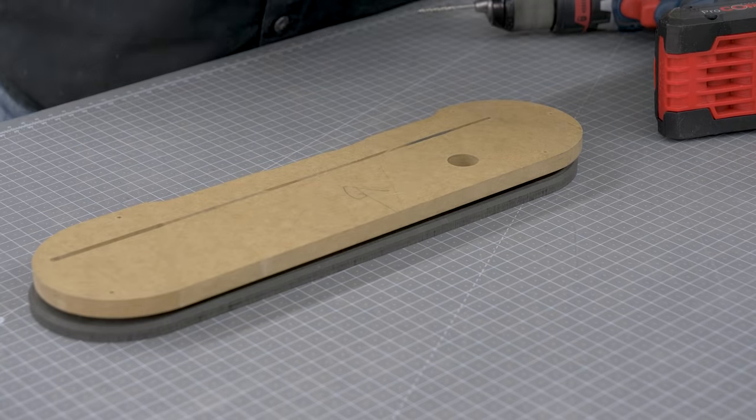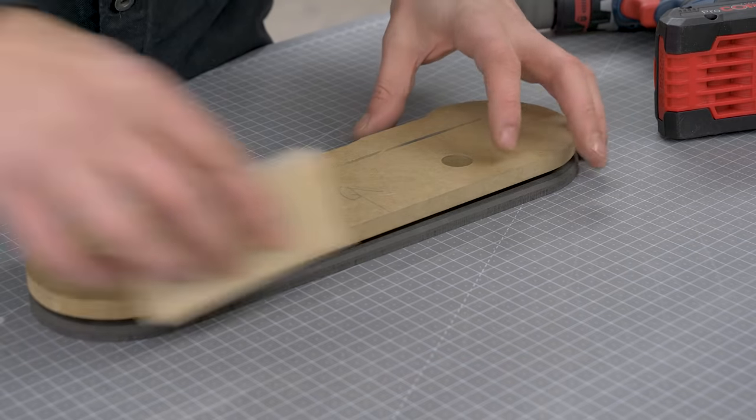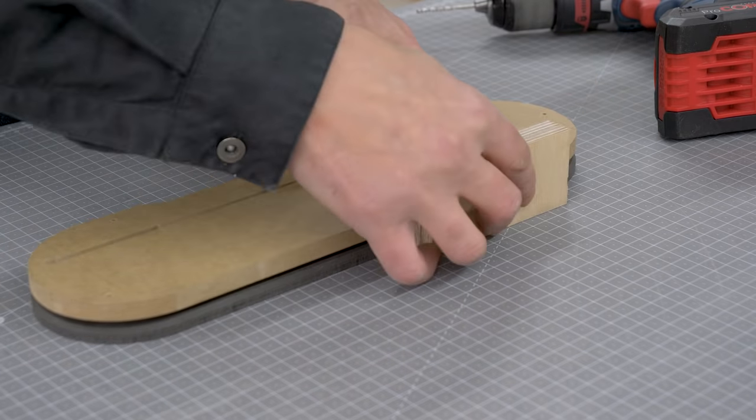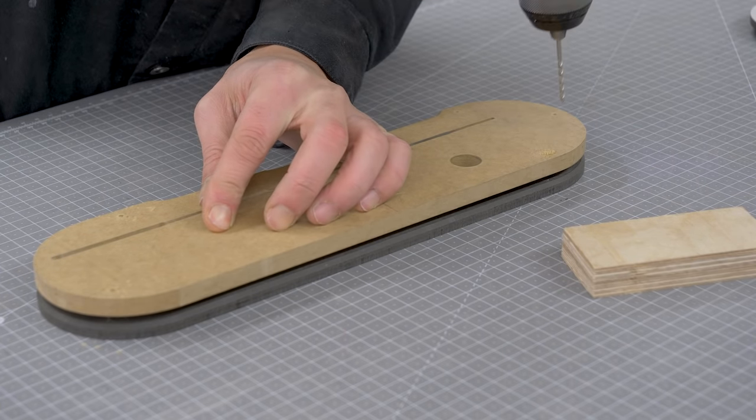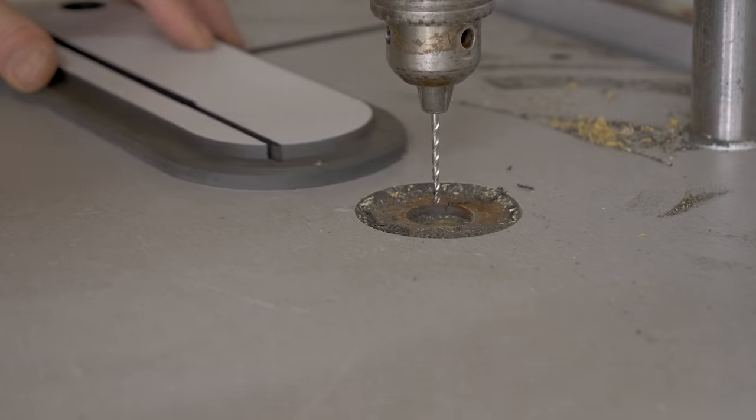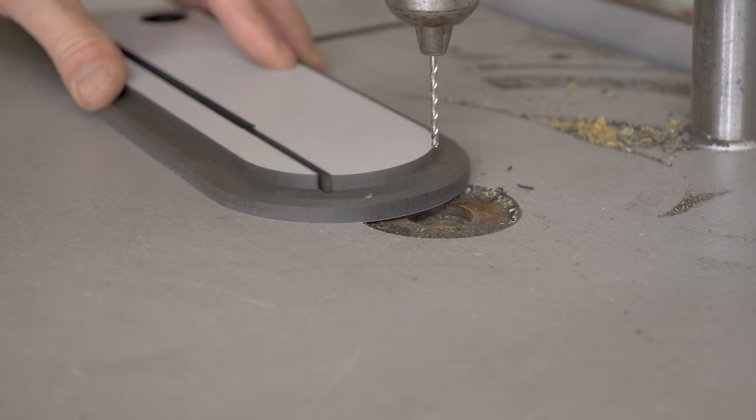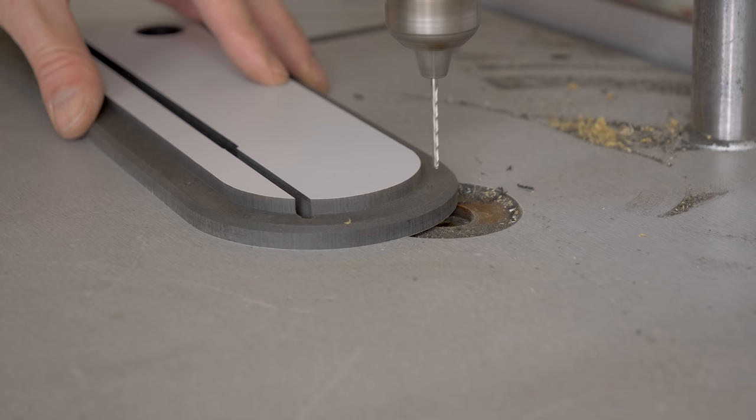I'll use the MDF jig again to mark the holes that will let me adjust the height of the inserts. I'll make the holes with a column drill, being careful not to make through holes.